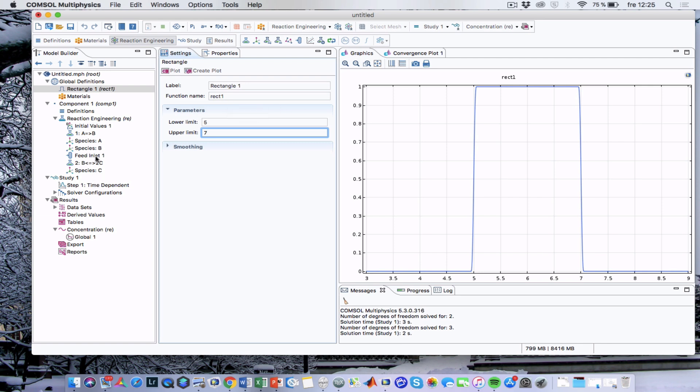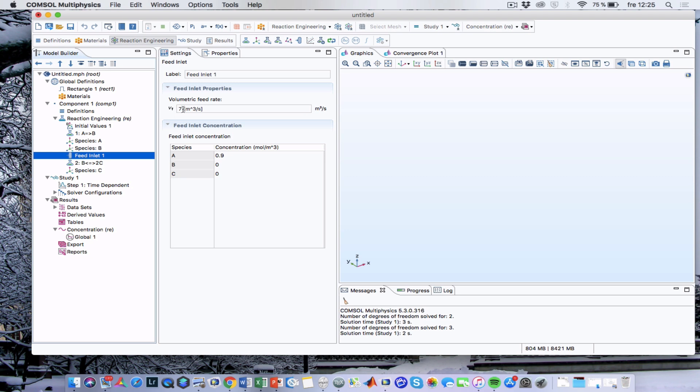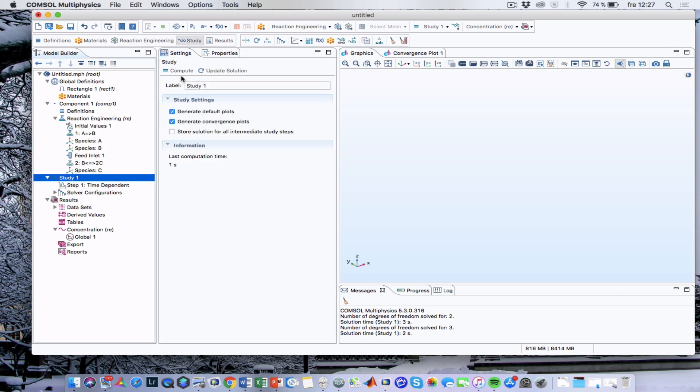So if we go to the feed inlet, we can define the feed inlet as 7 minus 7 times the function rect1, which is a function of time. And that will bring down the feed rate to 0 between 5 and 7. And we can now simulate this.